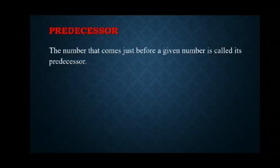Predecessor. The number that comes just before a given number is called its predecessor. For example, predecessor of 8 is 7 because we subtract 1 from 8, it gives 7.